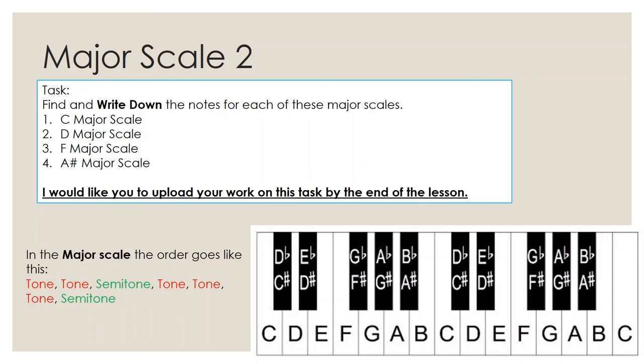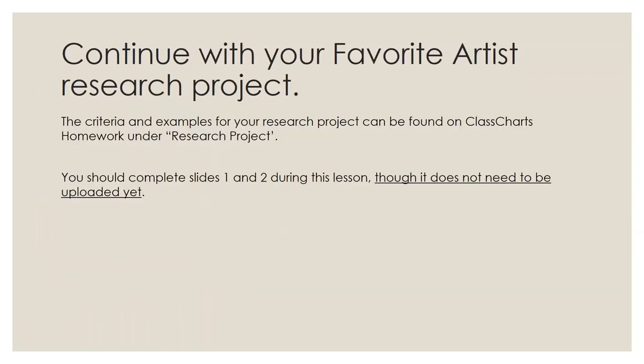So the C major scale: C, tone to D, another tone which is E, then a semitone which is F, then a tone which is G. And I won't work out the rest for you, but that's the start. You've basically just got to go through the step motions. Once you've done all that, you can continue with your project on your favorite artist.